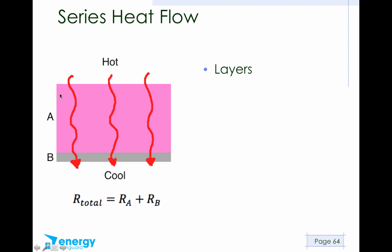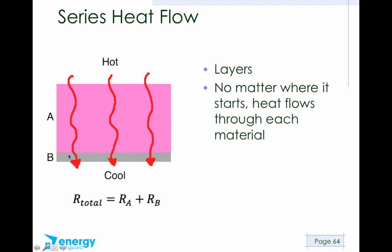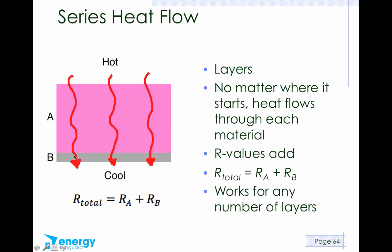That means that the amount of heat flow is going to be the same no matter which path it takes, and the R values will add. So the total R value is the R value of layer A plus the R value of layer B. That's our total R value. It doesn't matter how many layers we have. We could have 100 layers. We would just add up all the R values.